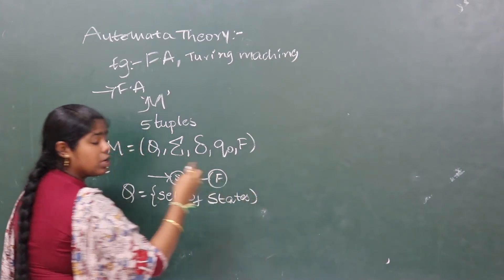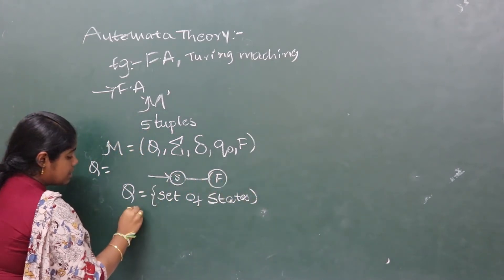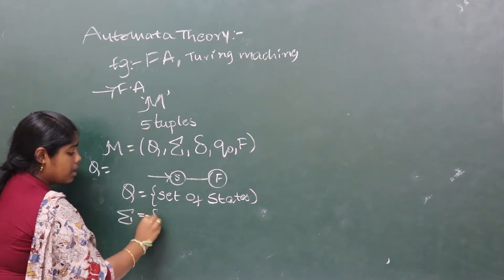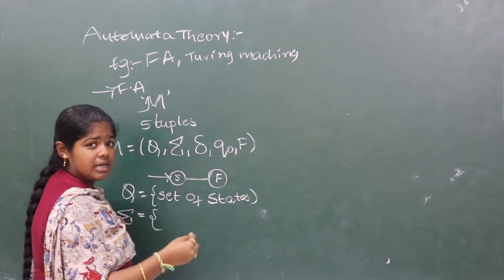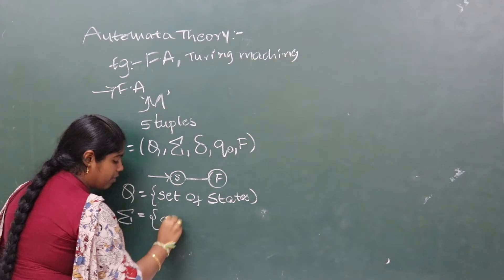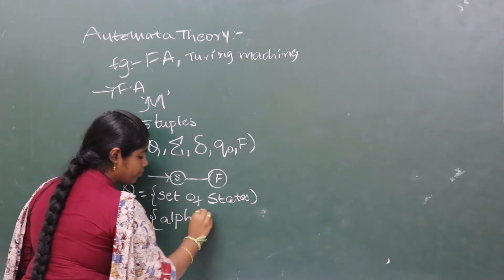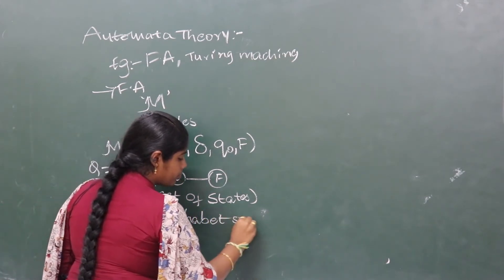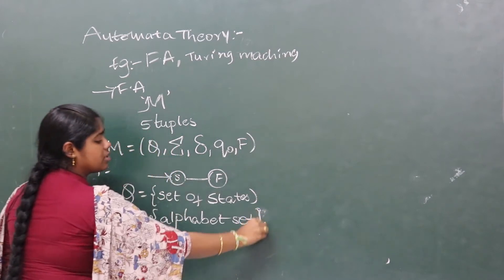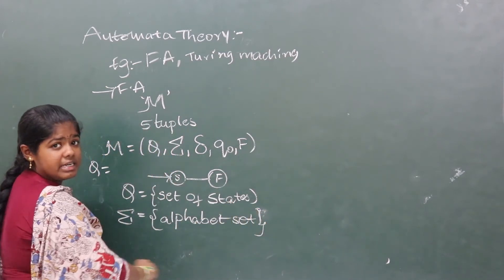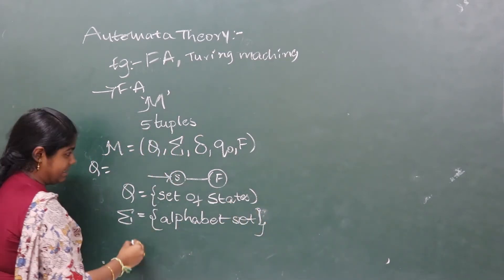That means, the machine is a set of states. That means, define the state. Sigma. What is sigma? We already have studied in introduction. A set of states. Set of alphabet. That means, one machine of input alphabet set, a set of alphabet set. That means, alphabet set.